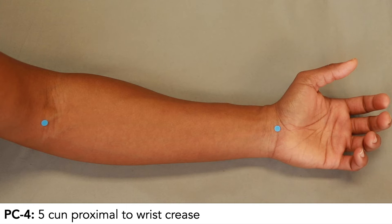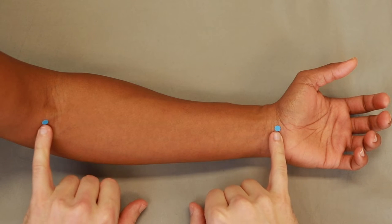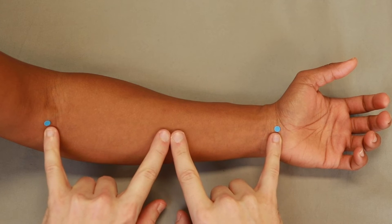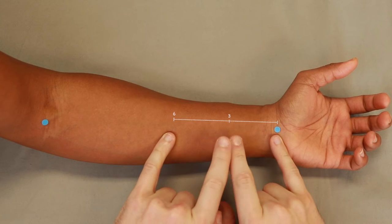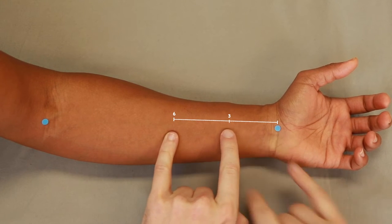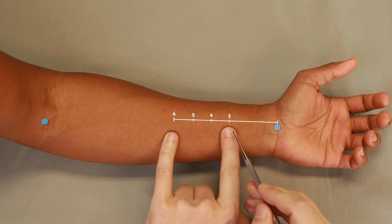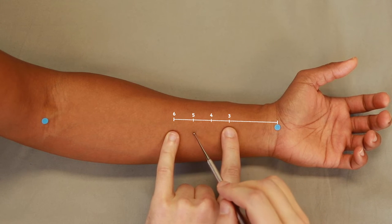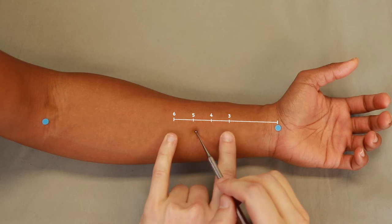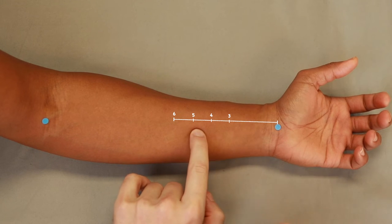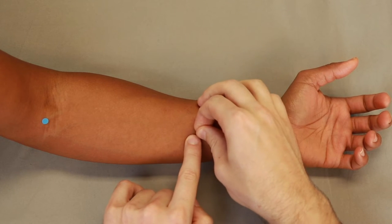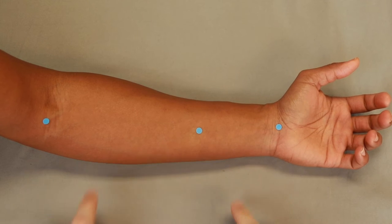So pericardium 4 is 5 cun proximal to the wrist crease. So here's 12 cun, half of 12 is 6. Here's 6 cun, half of 6 is 3. So we have 3, 4, 5, 6. We want 5 cun for pericardium 4 between the two tendons.